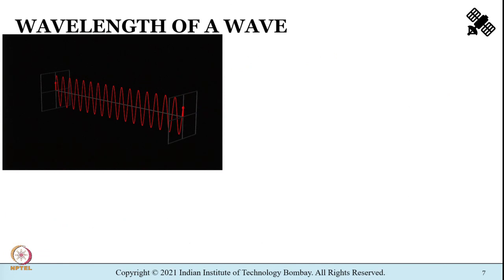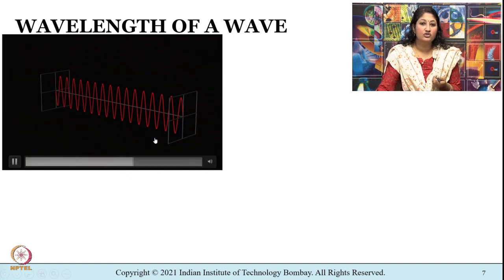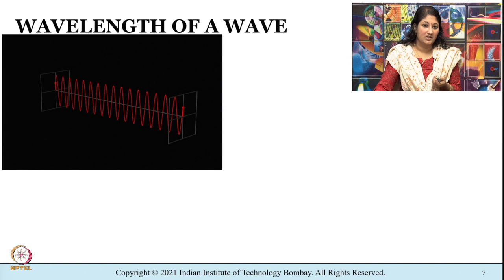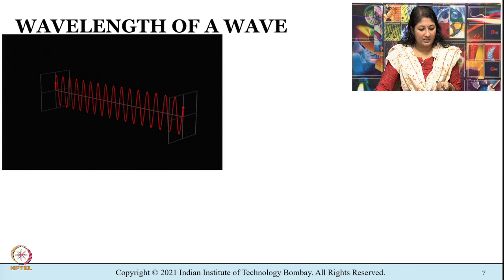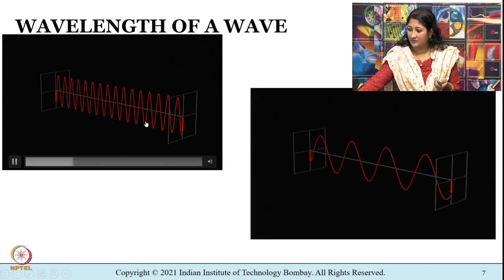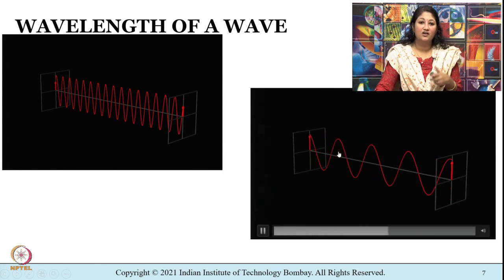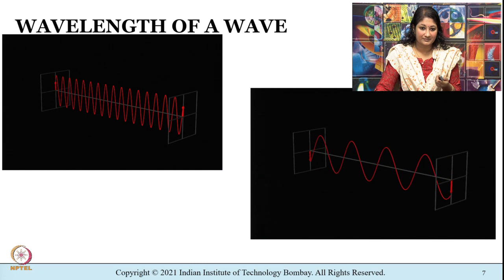Now let us go to wavelength of a wave — it is the distance between two successive crests or two successive troughs of a wave. What you see here is a shorter wavelength and a longer wavelength.